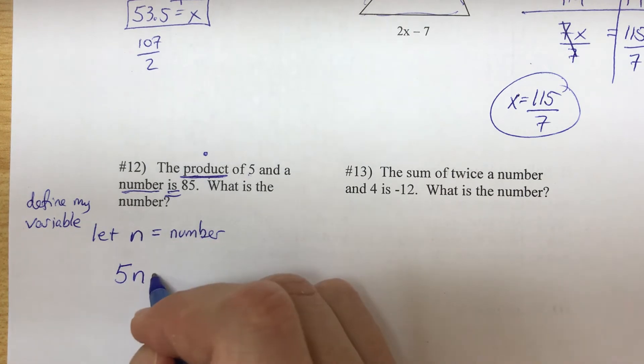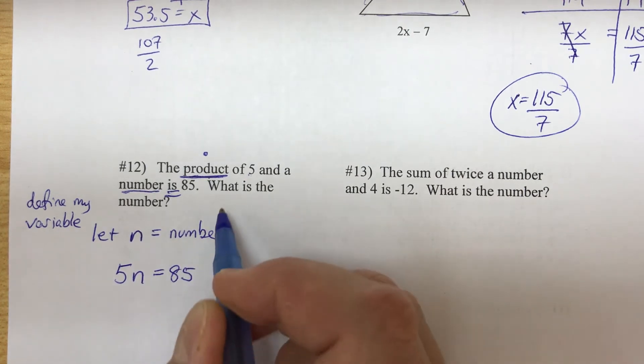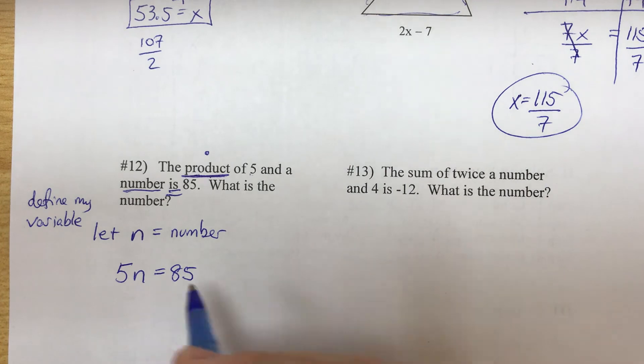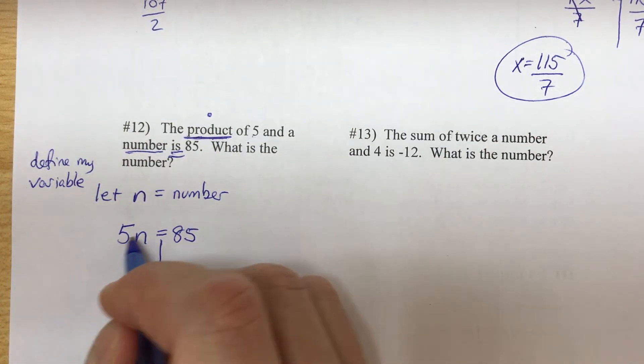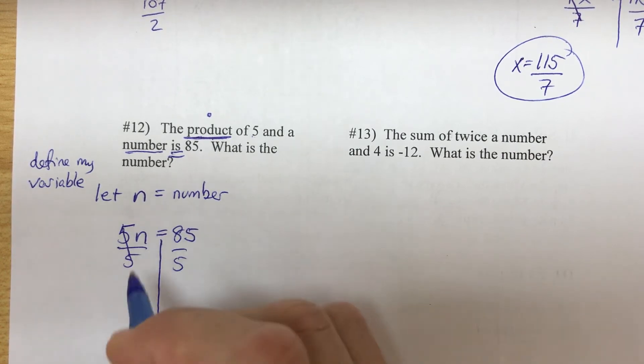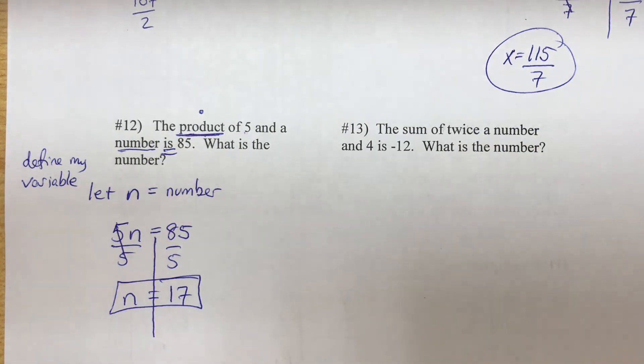What is the number? So in other words, they're telling us to solve. So this is actually a quick one. 5 times n - to undo that we divide by 5, and we get n equals 17. That's it. And to check it, 17 times 5 equals 85. It works. So product is multiply, we need to know that, and we define the variable and we set it up and solve.